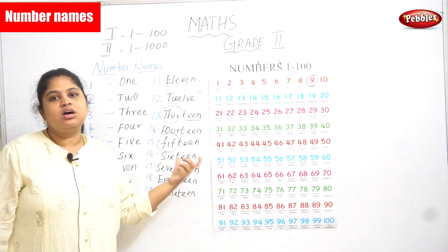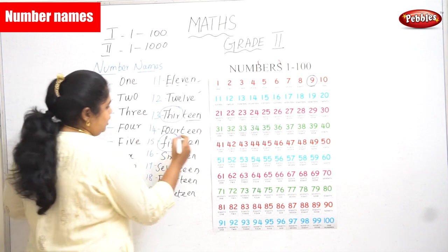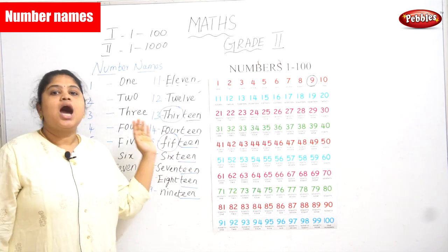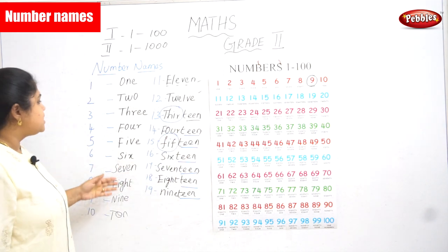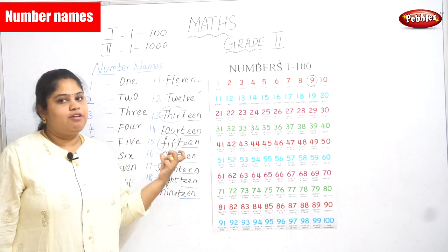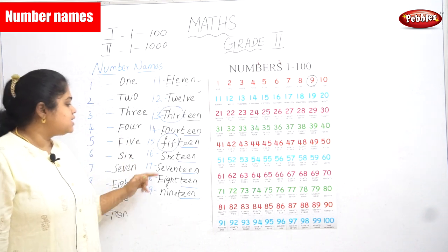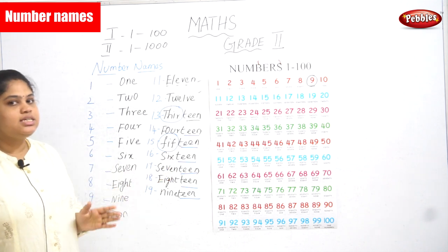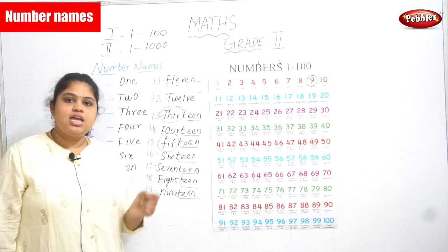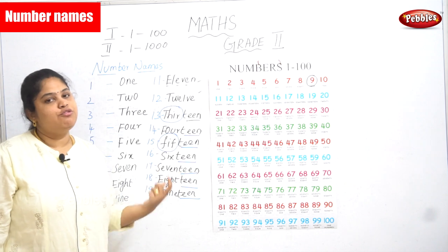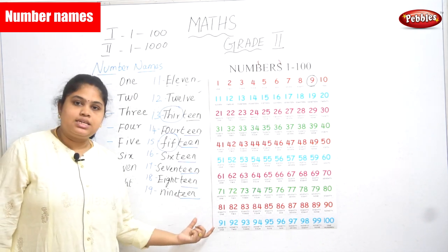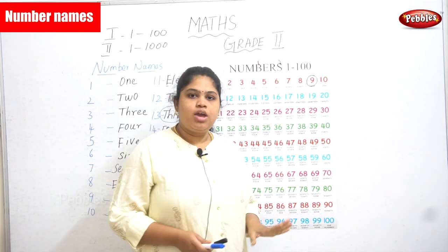From 13 to 19, the spellings end in 'teen' — T-E-E-N. What is the spelling for 13? T-H-I-R-teen, thirteen. Next, 14: you write the spelling for 4 and end it in teen, fourteen. 15: you write F-I-F-F and end in teen, fifteen. 16: write the spelling for 6 and end in teen, sixteen. 17: write the spelling for 7 and end in teen, seventeen. 18: write the spelling for 8 and end in teen, eighteen. 19: write the spelling for 9 and it ends in teen, nineteen. Note that only 13 and 15 are different — you have to be clear with thirteen and fifteen. Remaining numbers all end the same way. We have now read up to 1 to 19.